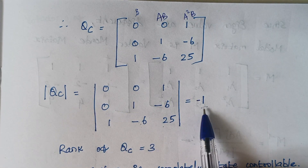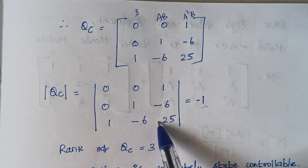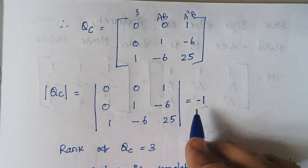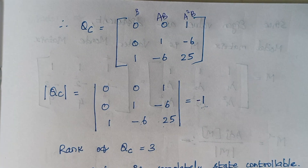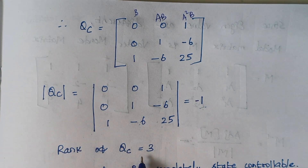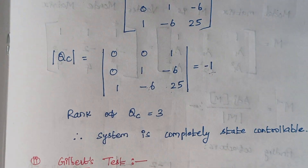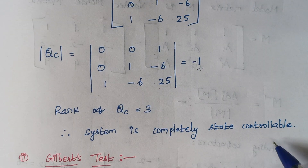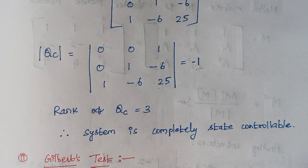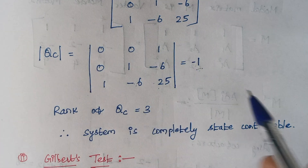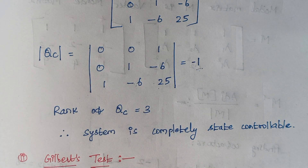So here we get minus 1: 0×(−6) = 0, minus of 1×1 gives −1. Anyway, the rank of QC is equal to 3, and the rank of matrix A is also equal to 3. Therefore, the system is completely state controllable.